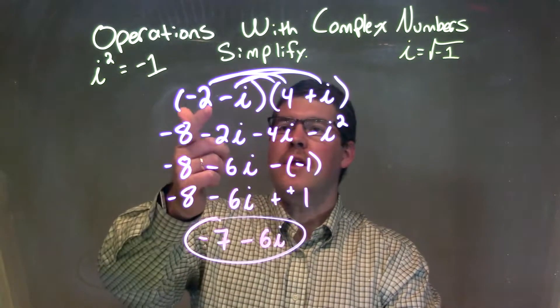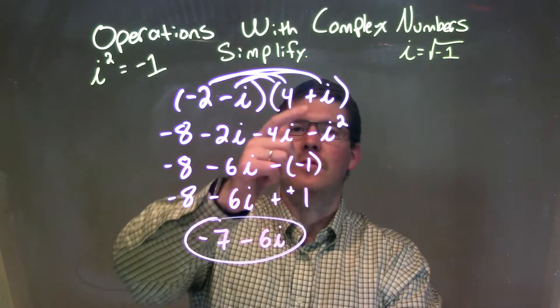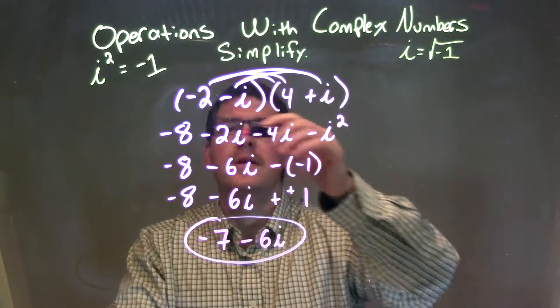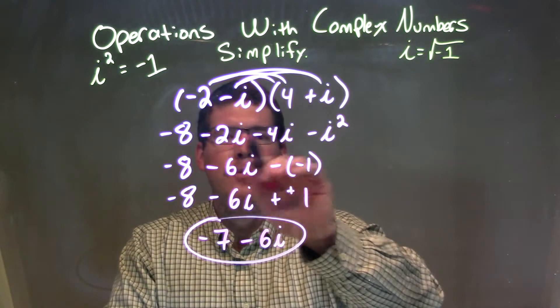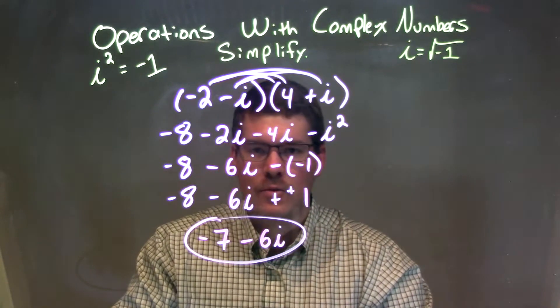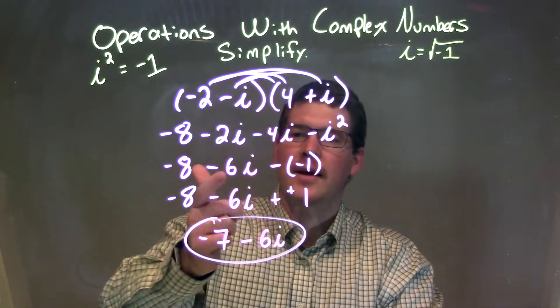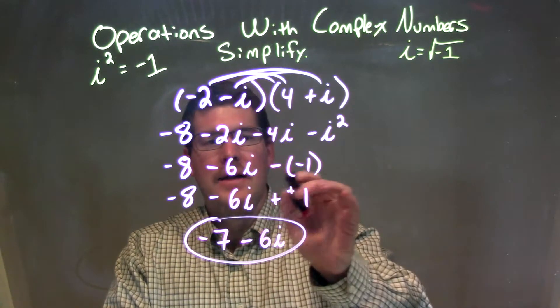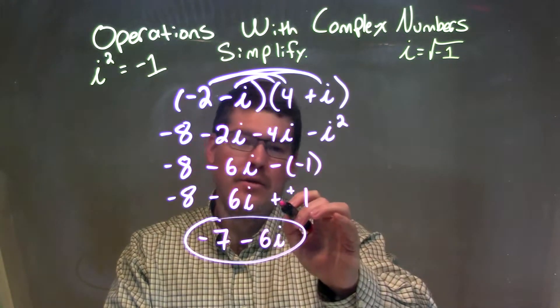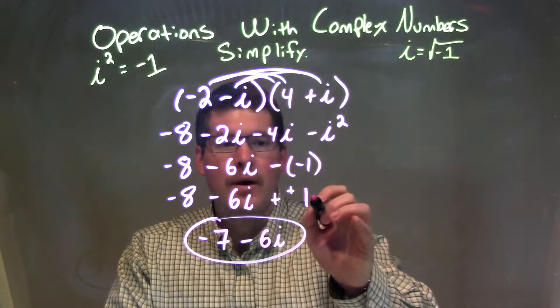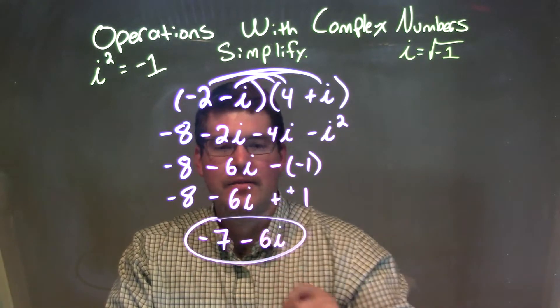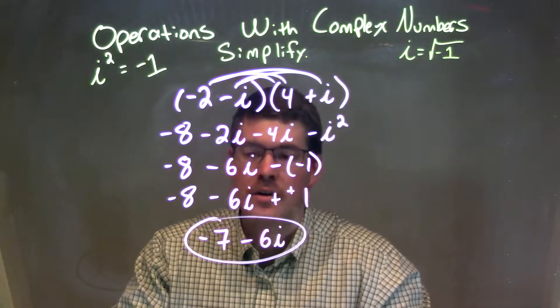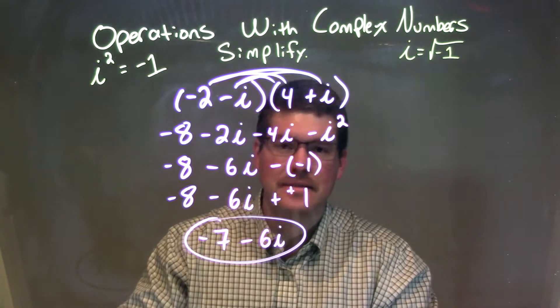So as a recap, we're given negative 2 minus i times 4 plus i. Well, we foiled it out, distributed, and got minus 8 minus 2i minus 4i minus i squared. We combine the minus 2i and minus 4i to get minus 6i, and the i squared becomes negative 1. Well, we know subtracting a negative is the same thing as adding a positive, so it's plus 1 here. We combine the positive 1 and the negative 8 to get negative 7, bring down the minus 6i. So again, our final answer is negative 7 minus 6i.